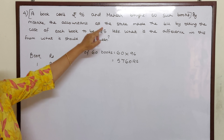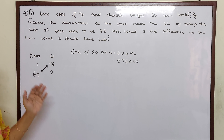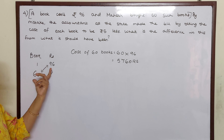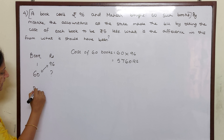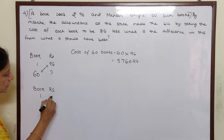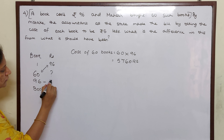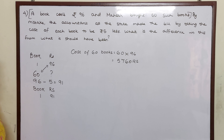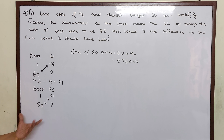The accountant at the store made the bill by taking the cost of each book to be 5 rupees less. That means actually Mahesh should have paid 60 into 96, which is 5,760. But what did the accountant do? He made the bill taking the book as 5 rupees less, which means he took one book as 91 rupees. The cost of the book was 96 but he took 5 rupees less, so he made a bill for one book costing 91 rupees. So according to him, the bill amount was what we have to find out — this is the wrong bill.